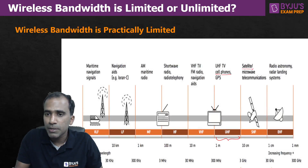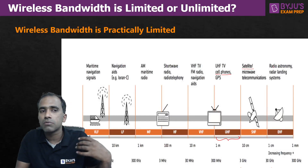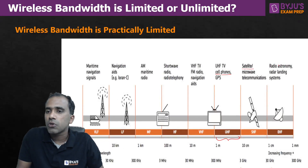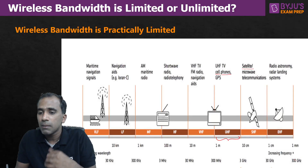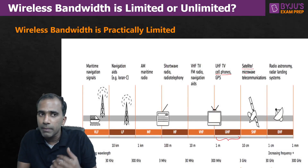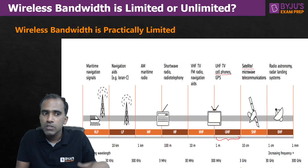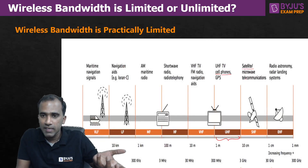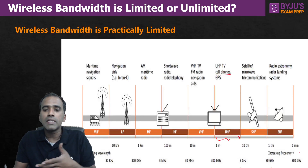We use satellite communication in the 3–30 GHz range. From 30 GHz to 300 GHz, we use it for astronomy research or radar landing systems. But if you observe, we don't do mobile communication above 30 GHz. Mobile communication and satellite communication are long-distance communications where high data needs to be transmitted, and that happens only below 30 GHz.